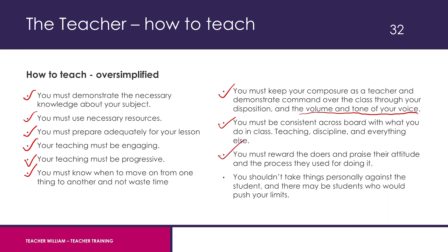Next, you must reward the doers. When a kid does something amazing — responds, pays attention, gives a good answer — you have to reward that. In rewarding them, you must praise their attitude and the process they used. It's not just about praising the person so they feel awesome. Let them know they took a good approach, which encourages them to continue and encourages other students to also take a good approach. Point to the fact that they answered a question, paid attention, and did what the teacher requires.